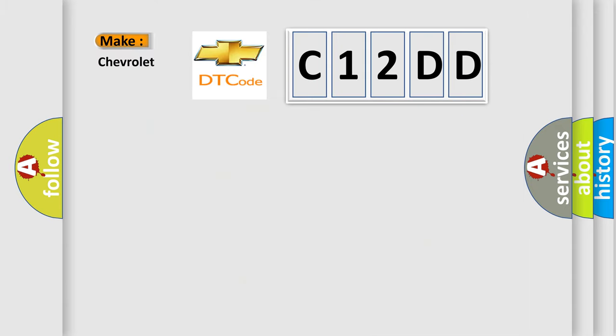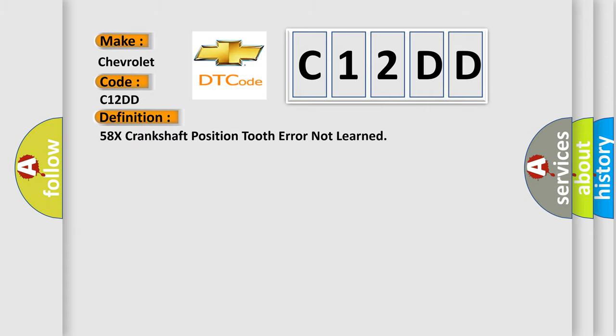So, what does the diagnostic trouble code C12DD interpret specifically for Chevrolet car manufacturers? The basic definition is 58x crankshaft position tooth error not learned.